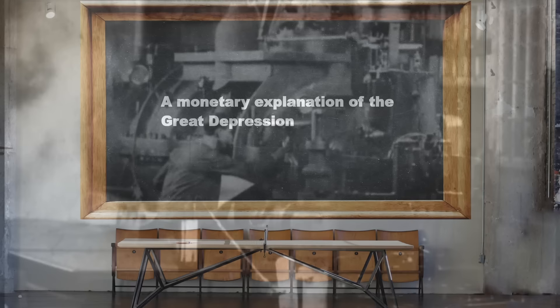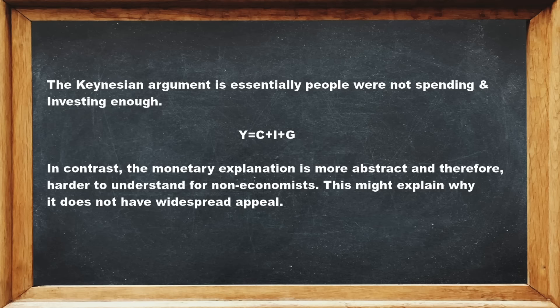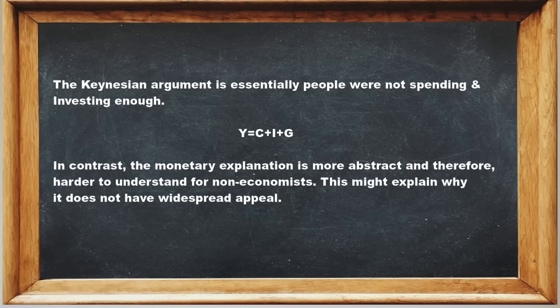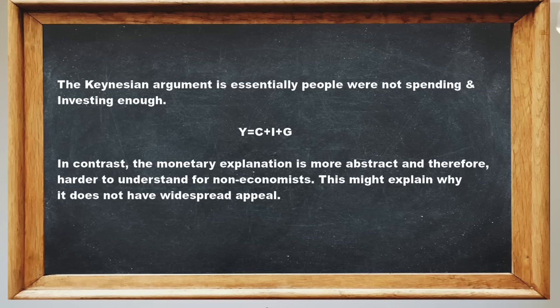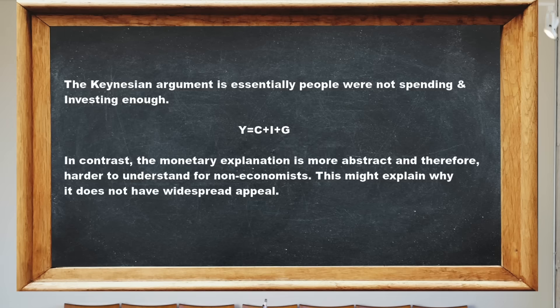A Monetary Explanation for the Great Depression. The Keynesian theory of causes of the Great Depression is more understandable to the layman than the monetary or Austrian theory for the explanation of the origins of the Great Depression. The Keynesian argument is essentially that people were not spending enough money. In contrast, the monetary explanation is more abstract, and therefore harder to understand for non-economists. This might explain why it does not have the widespread appeal the Keynesian theory does.